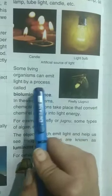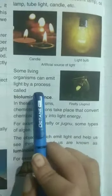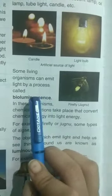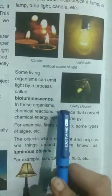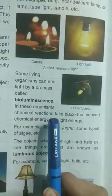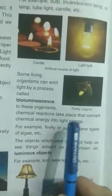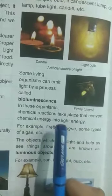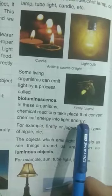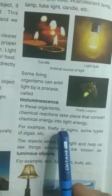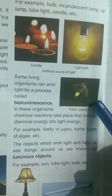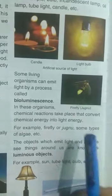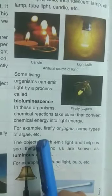Some living organisms can emit light by a process called bioluminescence. In these organisms, chemical reactions take place that convert chemical energy into light energy. For example, firefly or chugnu — you can see the picture of chugnu given here — and some types of algae, etc.